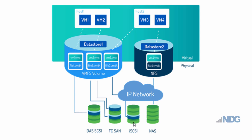iSCSI may require special host bus adapter cards, but it can also use regular NICs. These three block level storage solutions utilize the VMware file system: storage is presented to the datastore as LUNs with the VMware file system placed on top. Any backups or cloning of these virtual machines must be done through VMware and the ESXi servers.